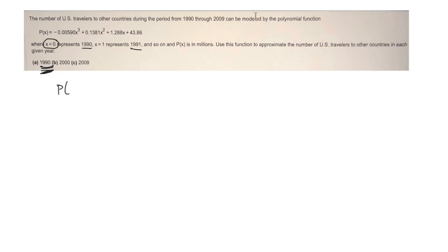then what I could do is just figure out what the value of that function was when I plug in a 0 everywhere I see an x. So 0 cubed plus 0.1381 times 0 squared plus 1.288 times 0 plus 43.86. So plug in a 0, and these first terms will all cancel because 0 times anything is 0. So P of 0 at the end is just going to be 43.86.